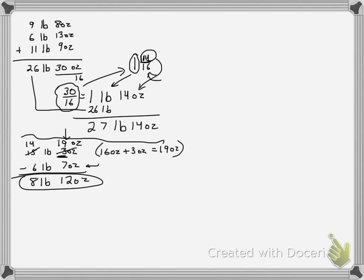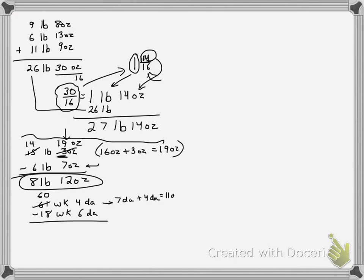Let's do a couple more for illustration. Always look at your lowest unit and decide: do I need to borrow or not? Here, 6 needs to be taken from 4, so I do need to borrow. I go to 61 weeks and convert it to 60 weeks. That one week I borrowed is 7 days, and I add that to the 4 days I already have, giving 11 days. So 11 minus 6 is 5 days, and 60 minus 18 is 42 weeks.